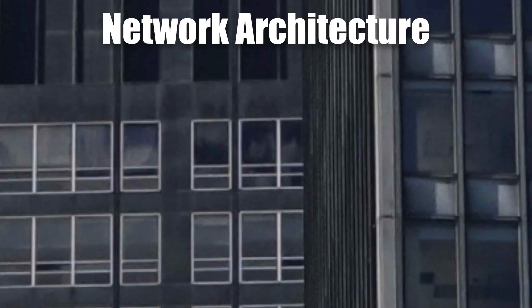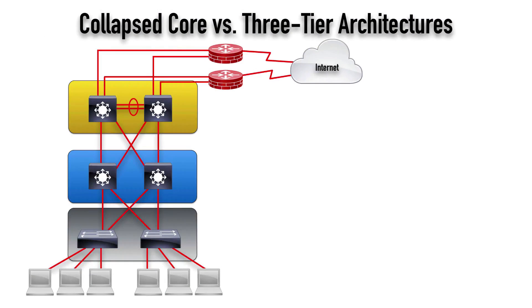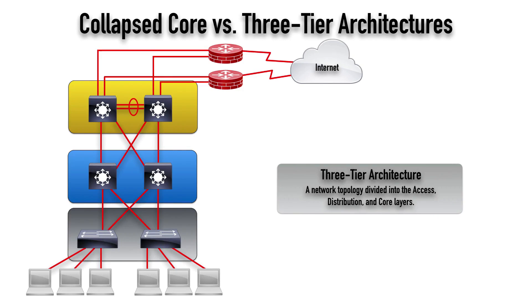Let's zoom in on the network that might be inside of this office building. We're going to compare specifically a collapsed core network with a three-tier network. The three-tier architecture is a topology divided up into three areas: the access, the distribution, and the core layers.